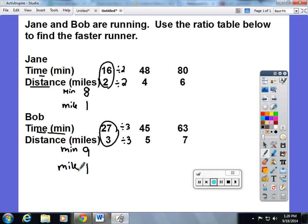Well, look at what you're comparing: time to miles, time to miles. In this case, Jane is the fastest runner because she has the lower time. It only takes her eight minutes to run one mile.